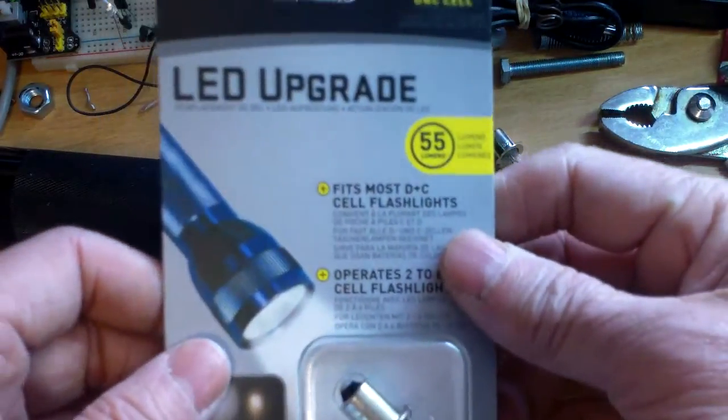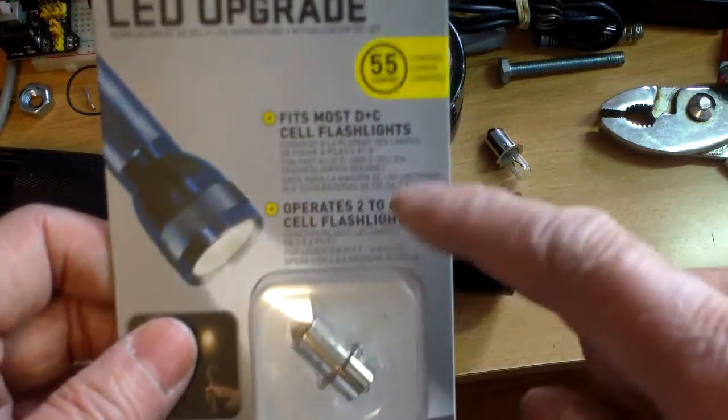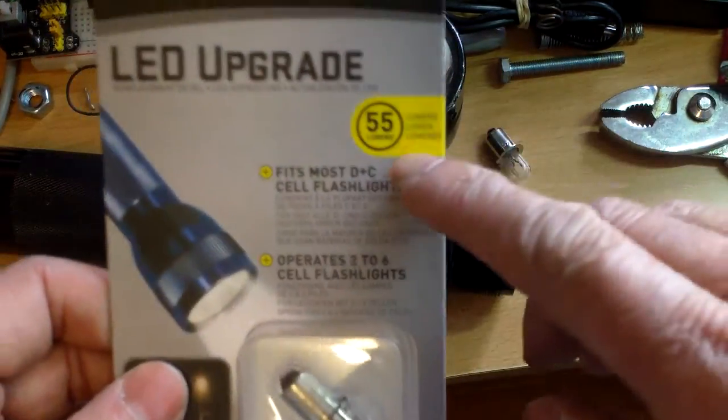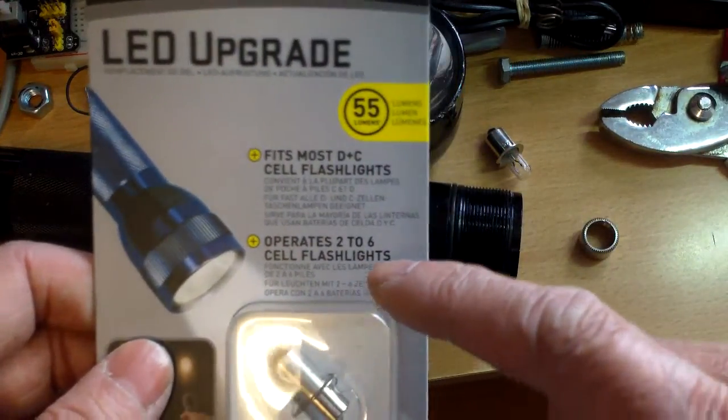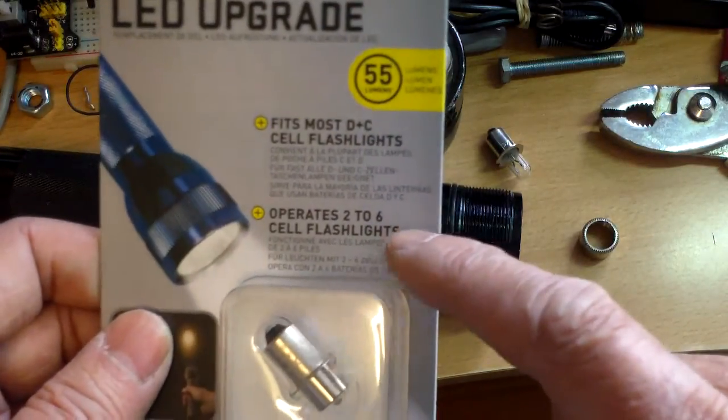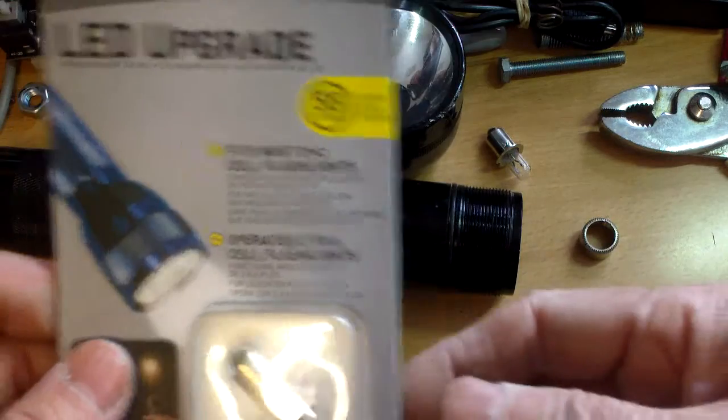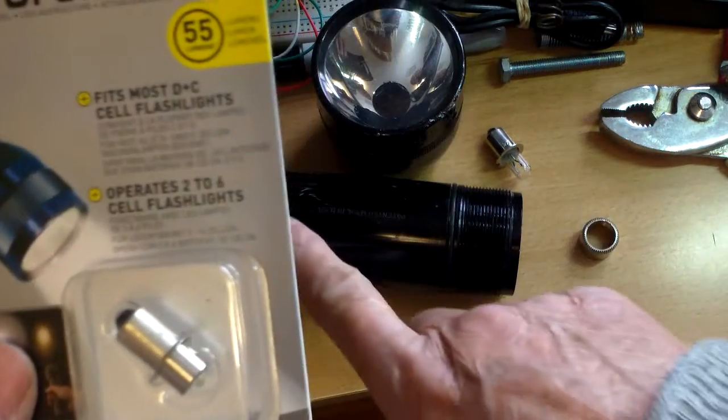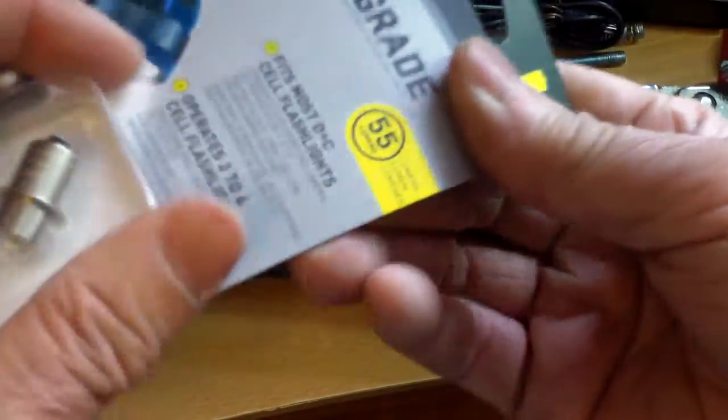I bought this LED bulb off eBay. It's about 55 lumens, and the most important thing is it operates from 2 to 6 cell flashlights. I don't know how they do it, but what I have here is 2 cells, so I'm going to use this in the flashlight.